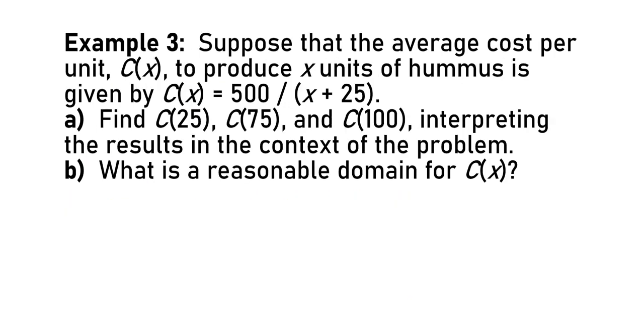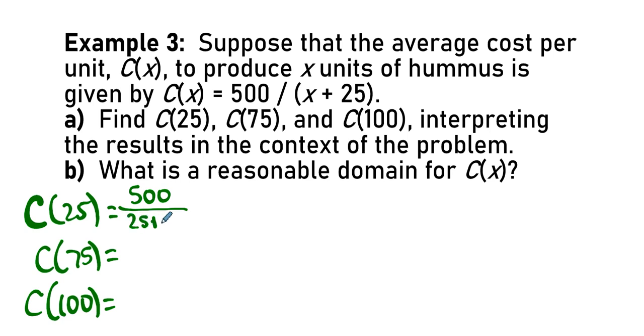One more example. Let's take it out of the buying and selling context for the moment. The average cost per unit for producing X units of hummus is given by this quotient function, 500 divided by X plus 25. So, we want to find C of 25, C of 75, C of 100. Take a moment, maybe pause the video in so doing. Take a moment and find those values.